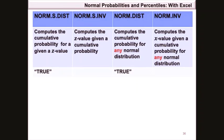Using TRUE in the norm.s.dist function returns the cumulative probability for a given z value — the probability to the left of the z value. If FALSE is used, Excel calculates the probability of observing a single z value, which equals zero because the normal distribution is continuous. Similarly, for norm.dist, TRUE computes the cumulative probability to the left of any value, while FALSE gives a probability of zero for the same reason.